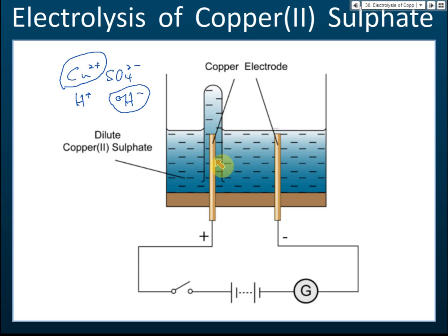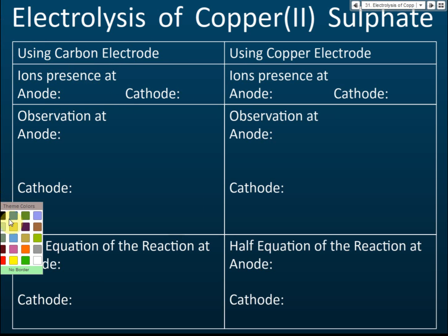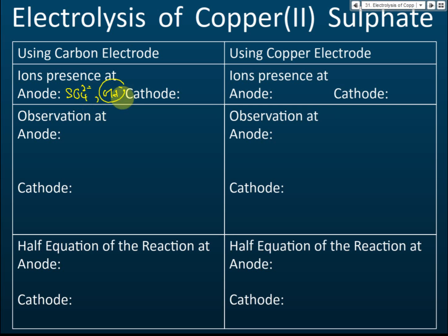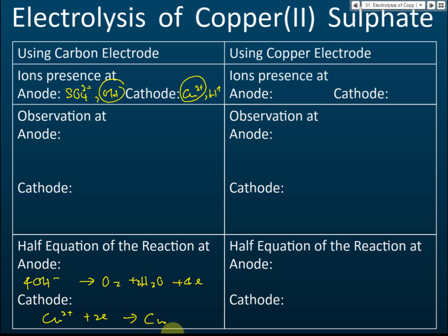Copper is an active electrode, meaning it will take part in the chemical reactions. First, let's look at what happens with carbon electrodes. At the anode, sulfate and hydroxide are present, and hydroxide will be selected. At the cathode, copper and hydrogen are present, and copper will be selected. At the anode, hydroxide is selected and forms oxygen and water, releasing four electrons.